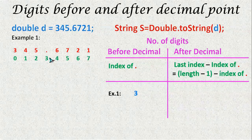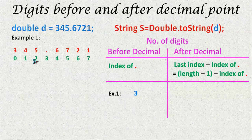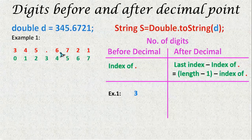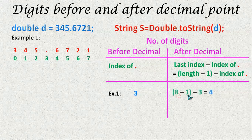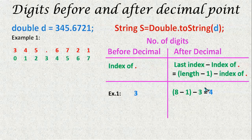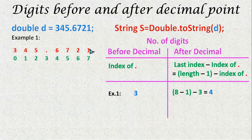In this first example, the index of dot is 3, so 3 digits are present before the decimal point. For the number of digits after the decimal point, we take the total length which is 8, minus 1 giving the last index 7, minus the index of this dot which is 3. So we get 4 — there are 4 decimal places.